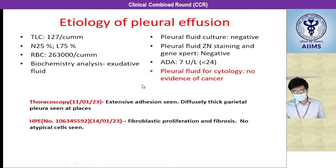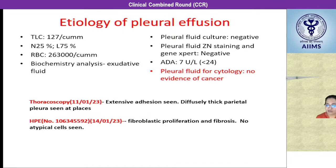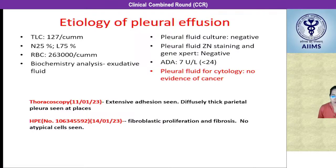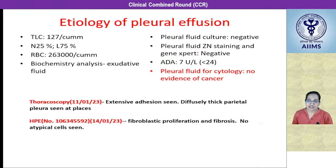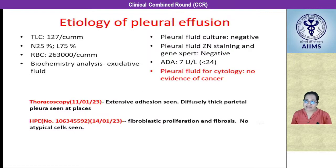For the etiology of pleural effusion, pleural fluid culture was negative. It was a low ADA exudative fluid. Cytology for malignant cells was negative, ruling out AML infiltration. A thoracoscopy on 11th January showed extensive adhesions with diffusely thickened pleura. Histopathological examination from biopsies showed fibroblastic proliferation with fibrosis and no atypical cells, suggesting it was part of the spectrum of eosinophilic disease.